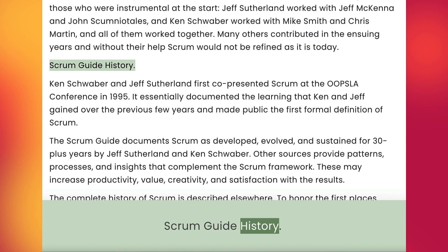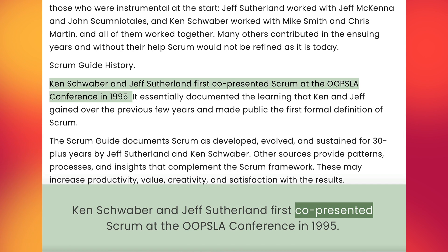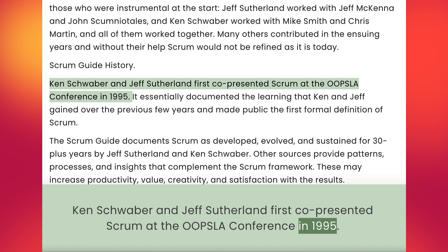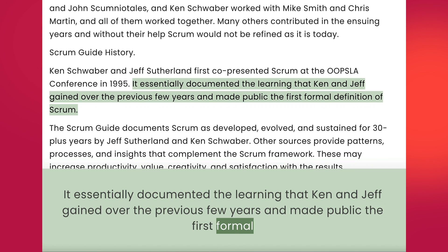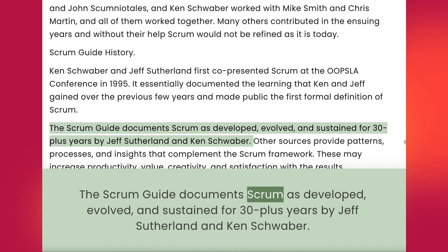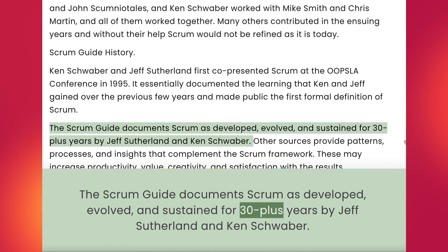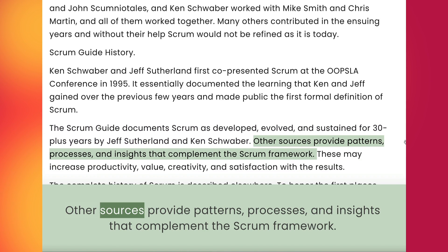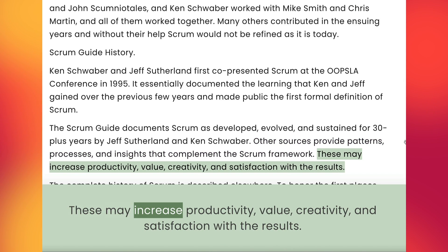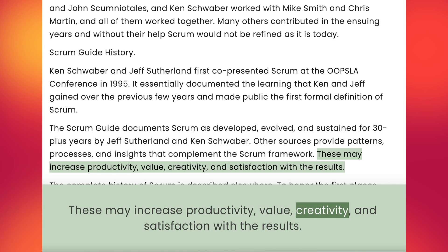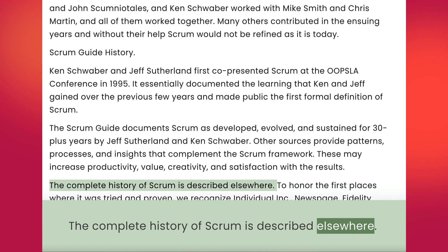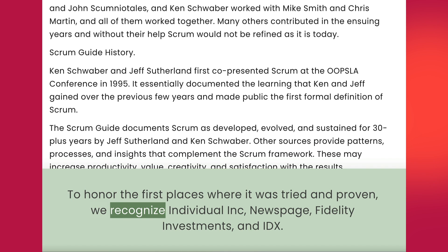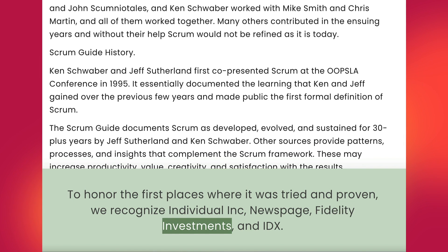Scrum Guide History. Ken Schwaber and Jeff Sutherland first co-presented Scrum at the OOPSLA conference in 1995. It essentially documented the learning that Ken and Jeff gained over the previous few years and made public the first formal definition of Scrum. The Scrum Guide documents Scrum as developed, evolved, and sustained for 30-plus years by Jeff Sutherland and Ken Schwaber. Other sources provide patterns, processes, and insights that complement the Scrum framework; these may increase productivity, value, creativity, and satisfaction with the results. The complete history of Scrum is described elsewhere. To honor the first places where it was tried and proven, we recognize Individual Inc., Newspage, Fidelity Investments, and IDX.